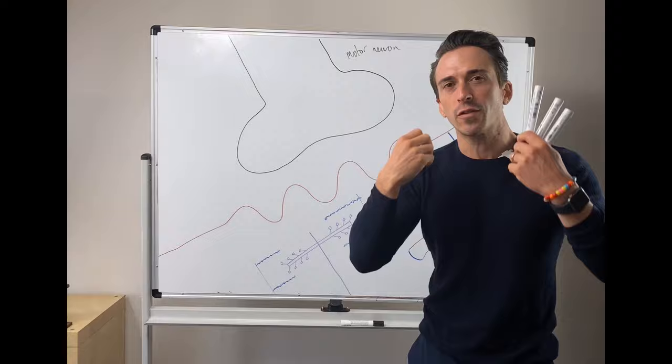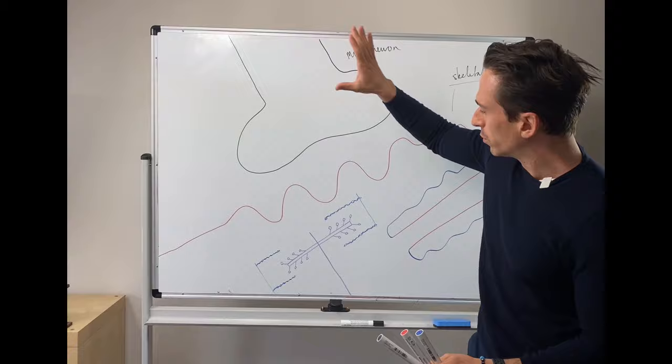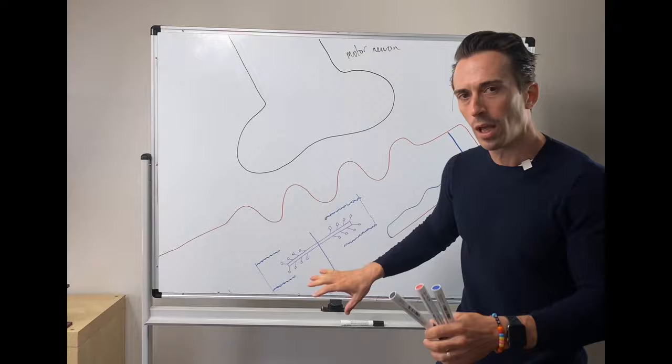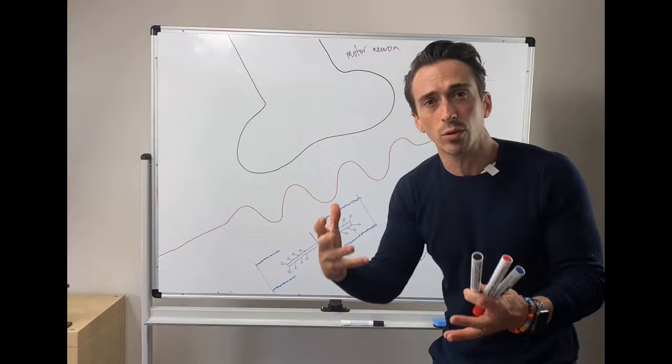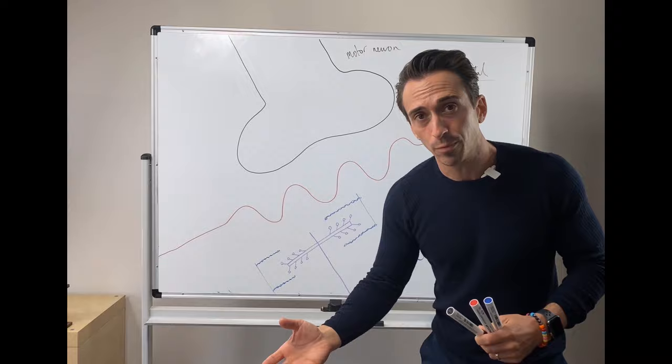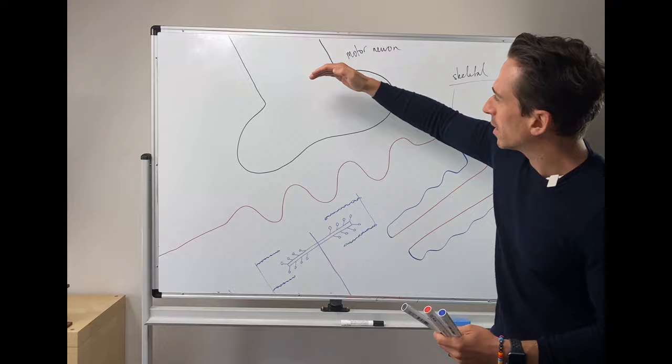This neuron needs to send a signal to this muscle and tell the muscle to contract. There is a space between the neuron and the muscle, so something needs to cross this space. The signal from a neuron is an electrical signal, but the muscle won't accept an electrical signal — it needs a chemical signal, which it then converts back into an electrical signal. So what we have is an electrical, chemical, electrical signal.